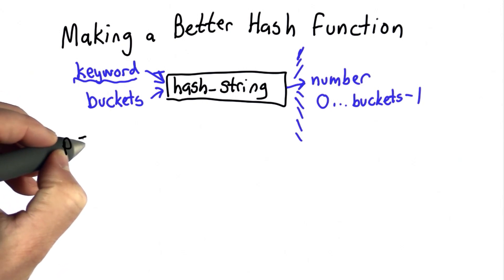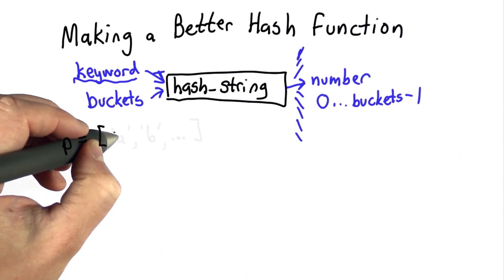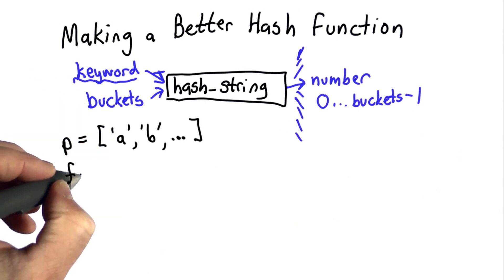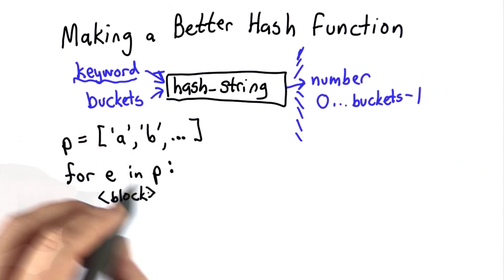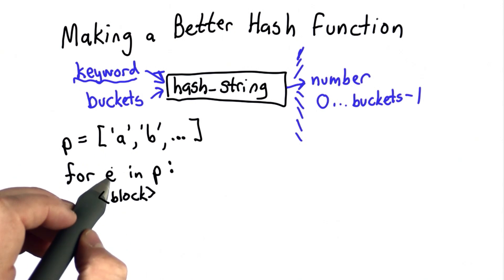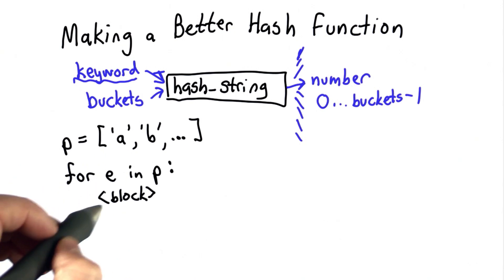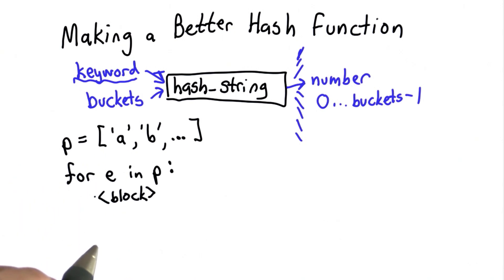We saw that with lists, if we had a list of items, we could use the for loop construct to go through the elements in the list. This would go through each element in p, assigning it to the variable e, and executing whatever is in the block for each element of p.